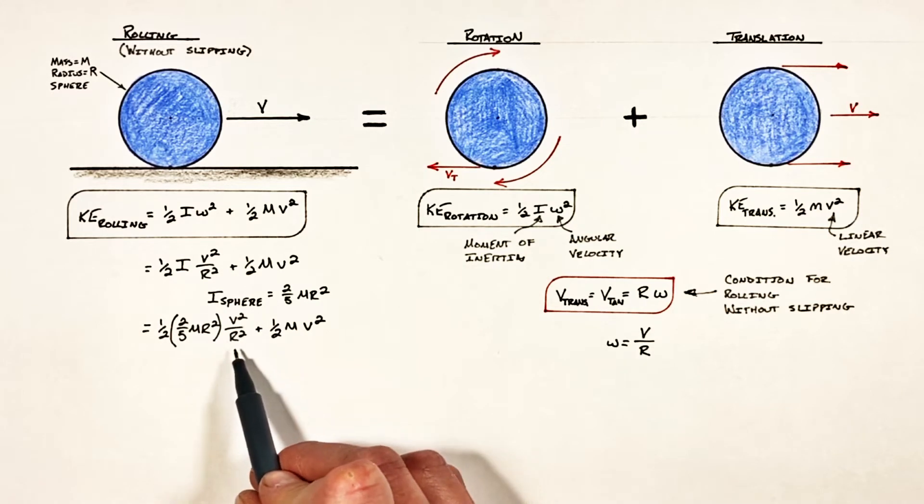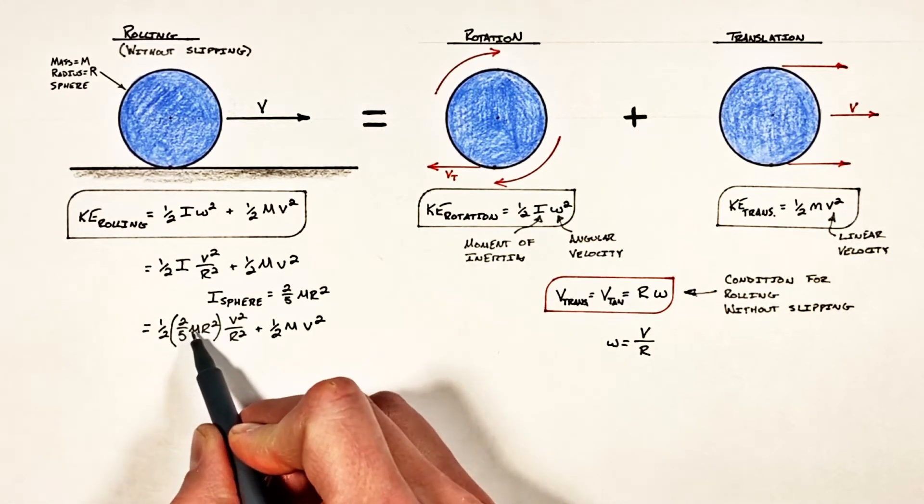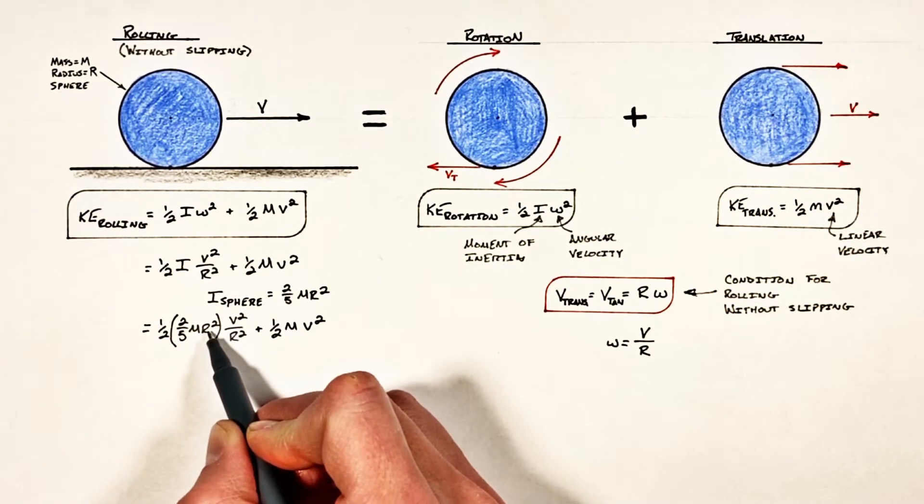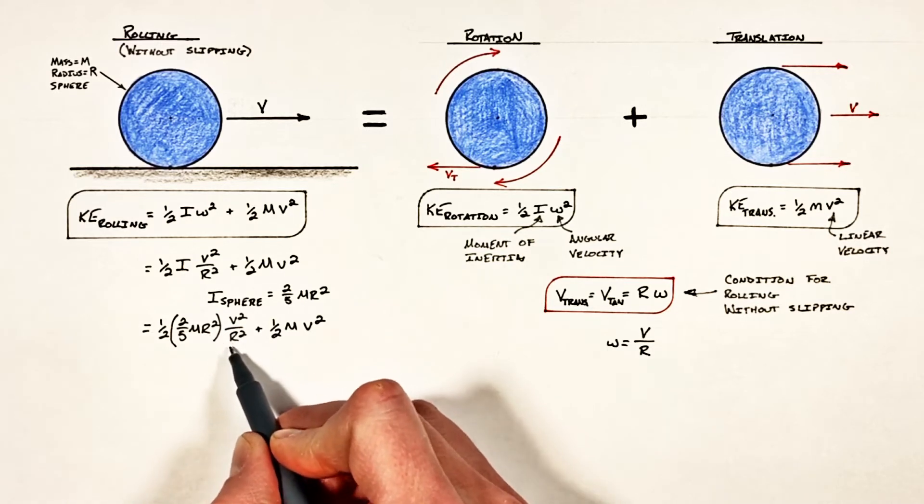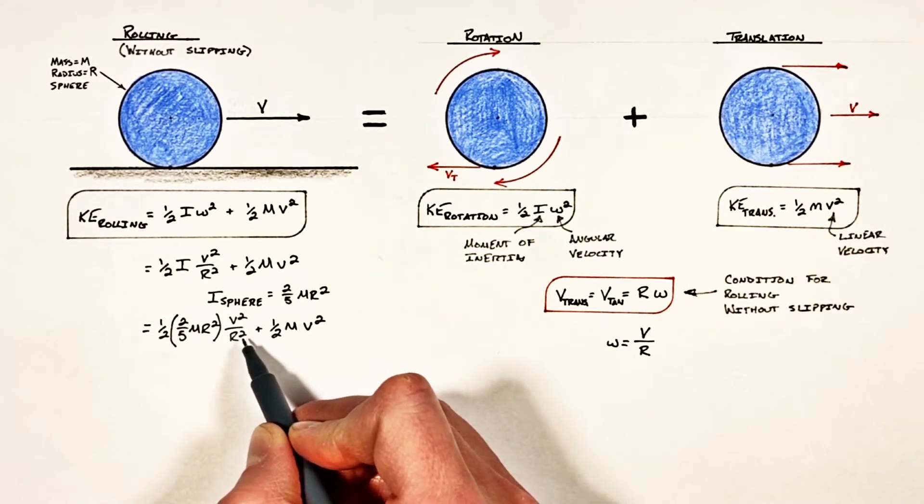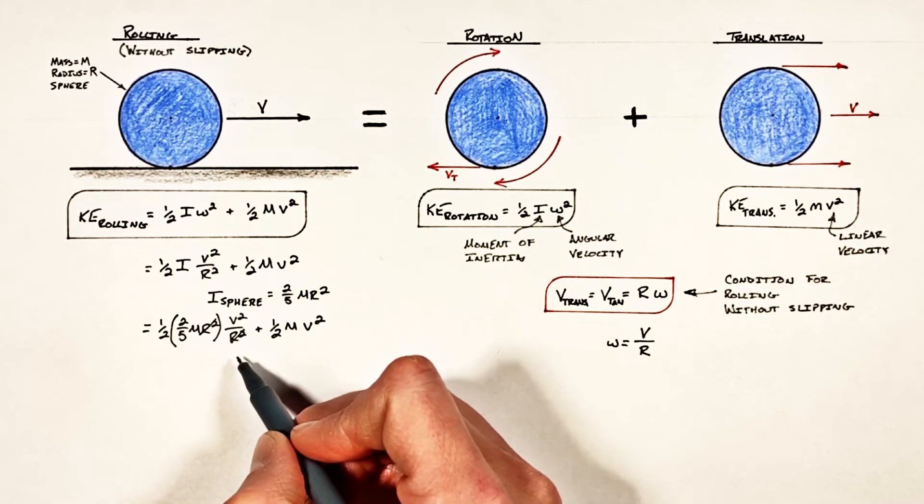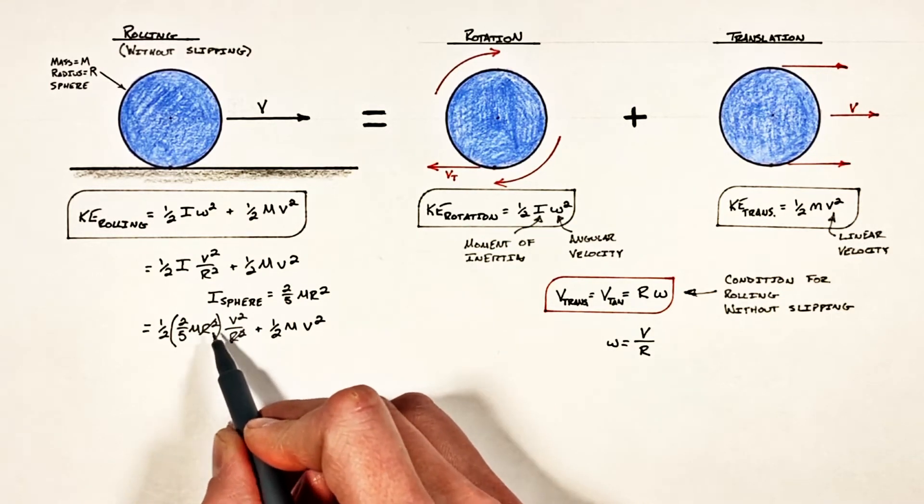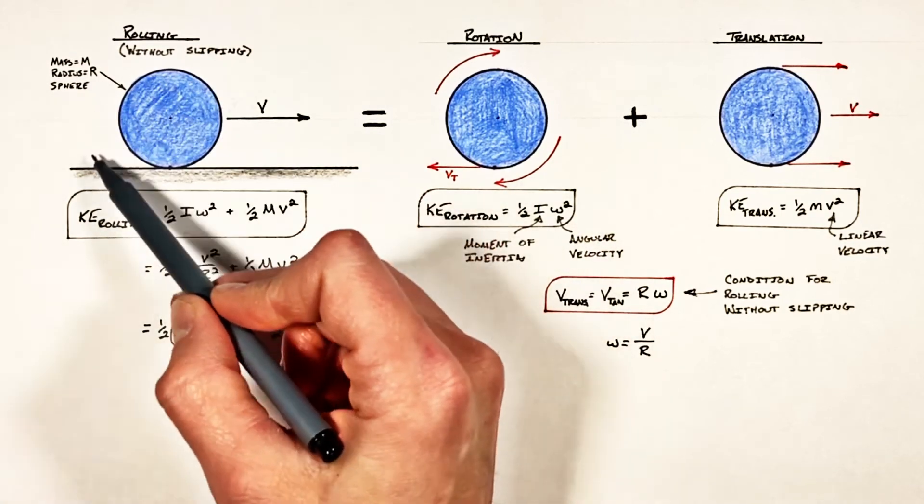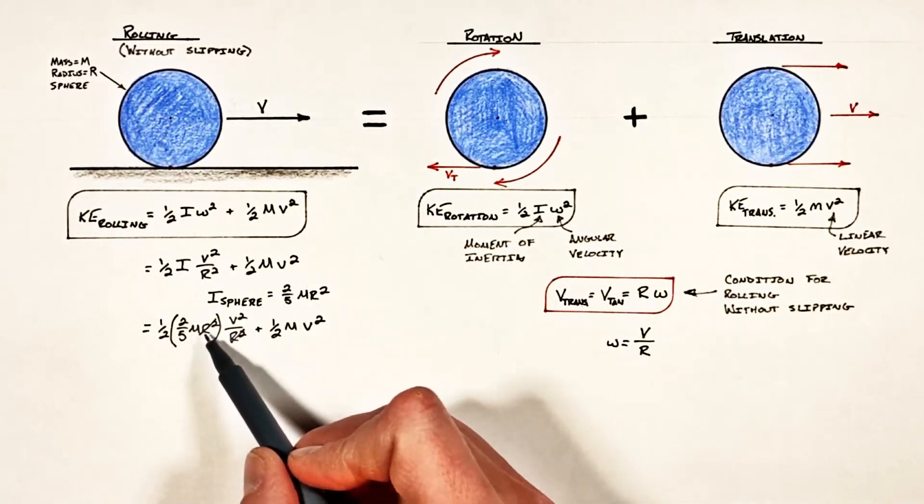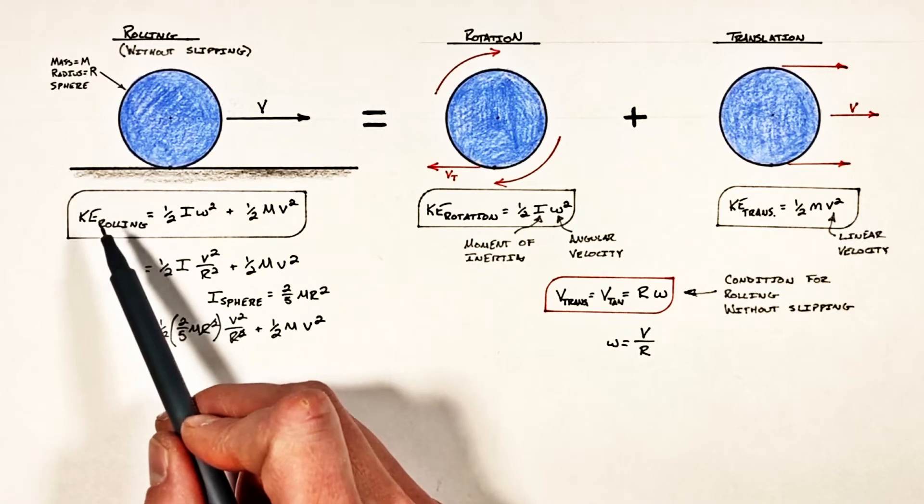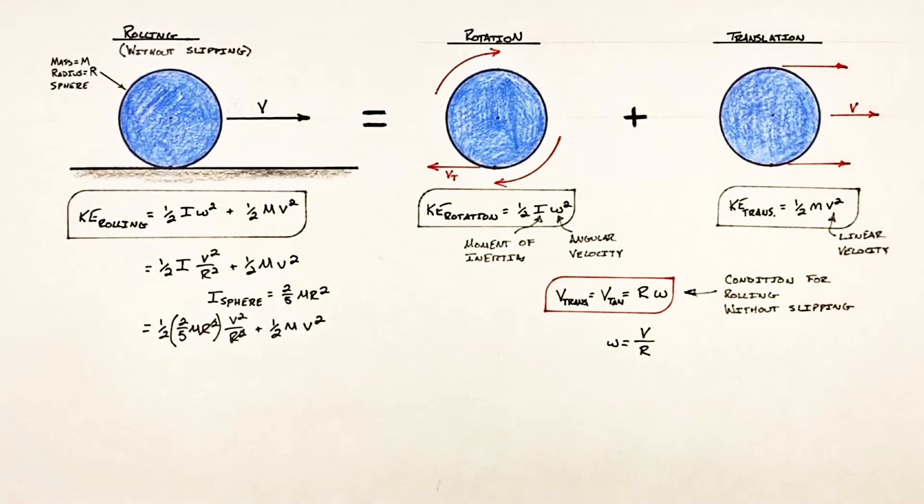And it's here I want to point out something that is tremendously important. You'll notice we have an r squared term here from our inertia and an r squared term here dealing with our angular velocity, and those two are going to cancel out. And this is incredibly important because what this tells us is the size of this sphere as it rolls along has absolutely no role in the kinetic energy of that sphere as it rolls.